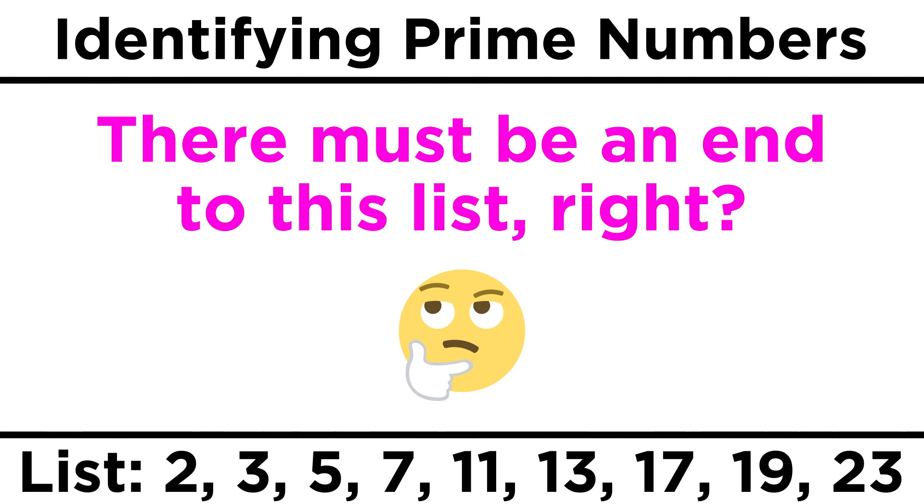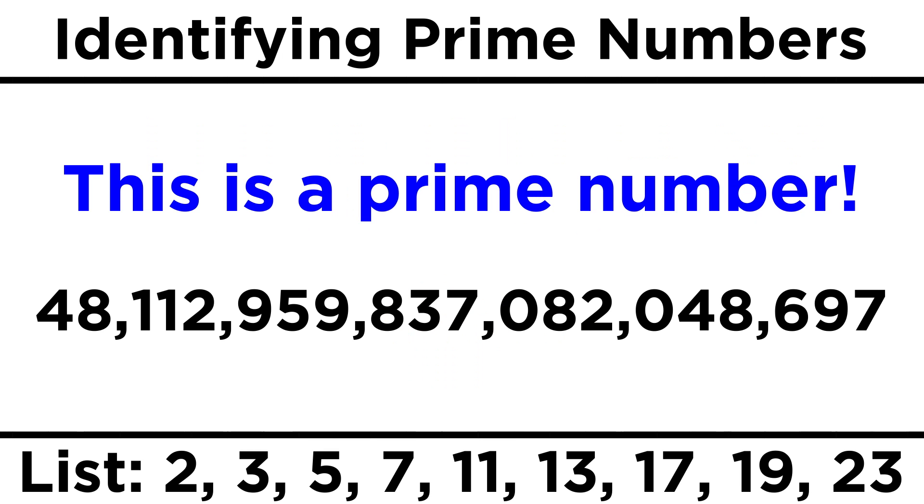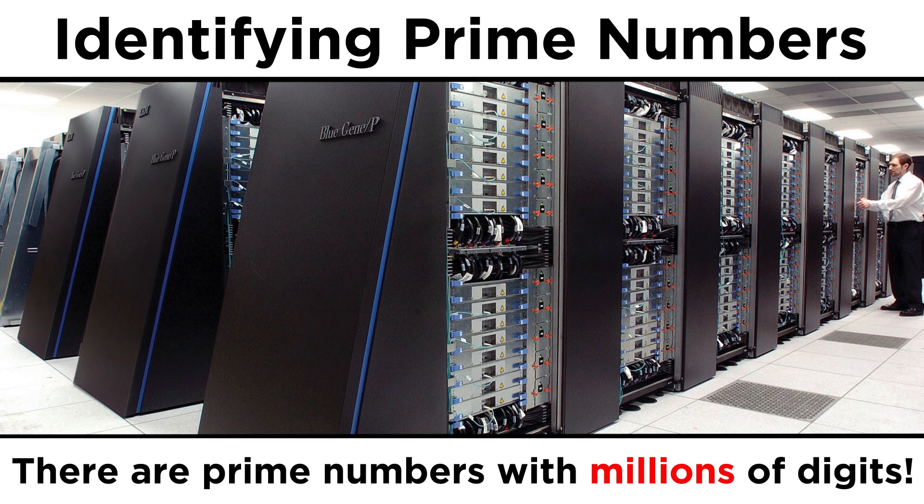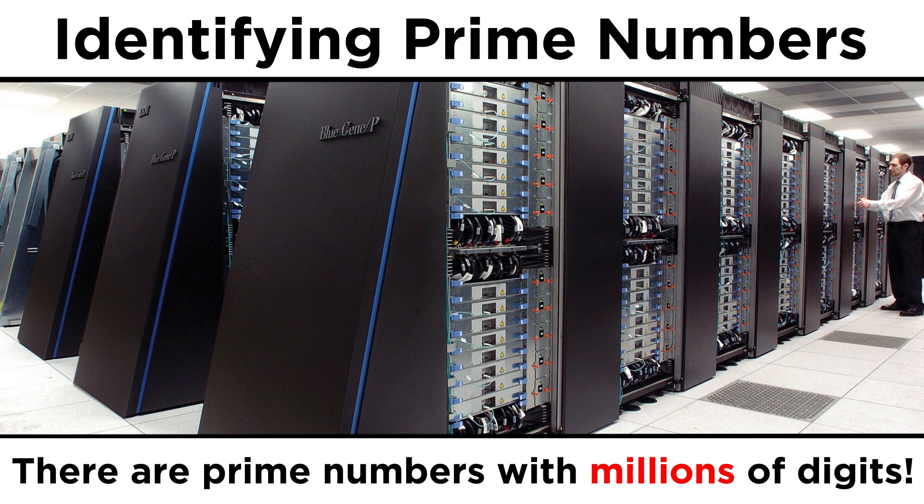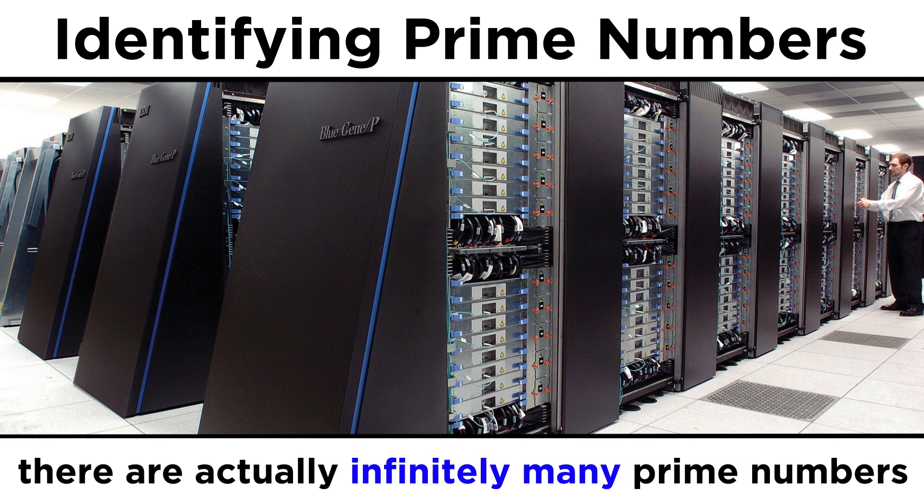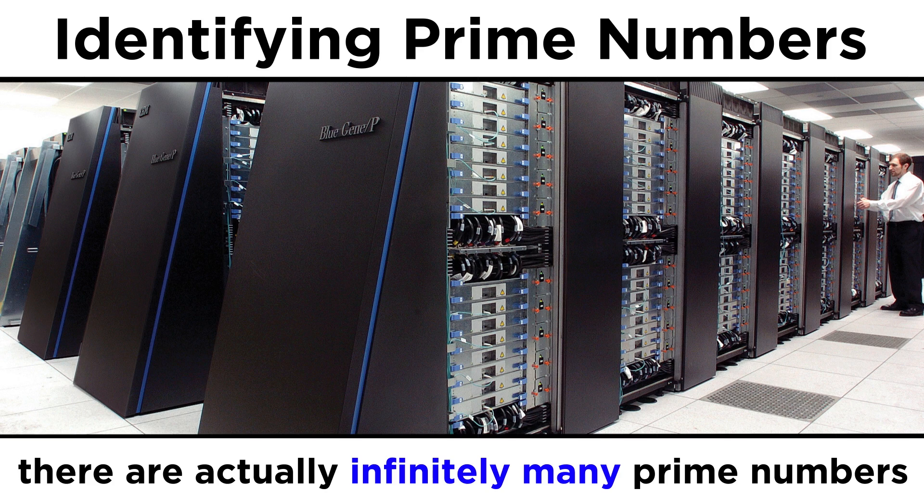One would think that this can't go very far, because once numbers get big enough, there have to be some factors in there. But there are some astoundingly huge prime numbers. The largest one discovered so far has millions of digits, which is mind-boggling, and it took thousands of computers running simultaneously for days to find this number. In fact, there are infinitely many prime numbers, so no matter how big the biggest one we found, there's always a bigger one.